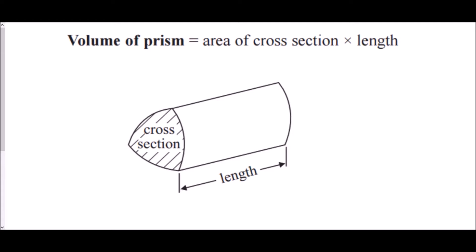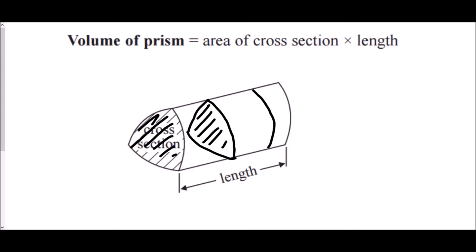Now what does it mean by the cross section? Well, basically a prism is a shape which has the same shape all the way throughout its length. So if you sliced the shape at any point you would receive exactly the same shape. This would be the same shape all the way through its length if sliced at any point. So we have the area of the cross section times length gives us the volume of that prism.